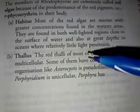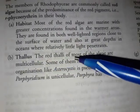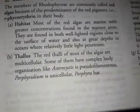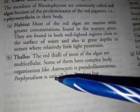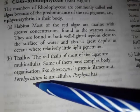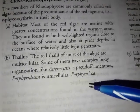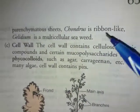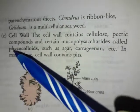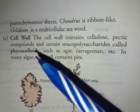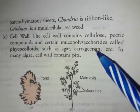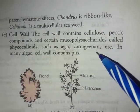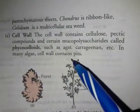Most red algae are multicellular. Some have complex body organization — Asterocystis is pseudofilamentous, Porphyridium is unicellular, Porphyra has parenchymatous thallus, Chondrus is ribbon-like, and Gelidium is a multicellular seaweed. The cell wall is cellulosic and pectic compounds with certain mucopolysaccharides called phycocolloids such as agar and carrageenan.